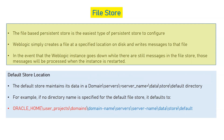Even if WebLogic goes down while there are messages in the file store, those messages will be processed when the instance is restarted. If some applications are sending messages to the JMS provider and some are picking them up, and in between the server crashes, your messages will be stored at the file system level. Once the JMS services are back up, the messages will be processed and will not get lost.